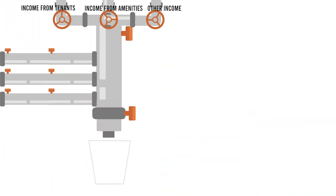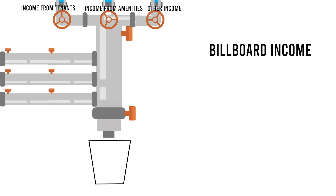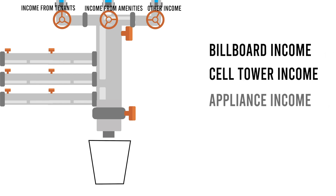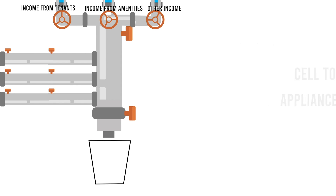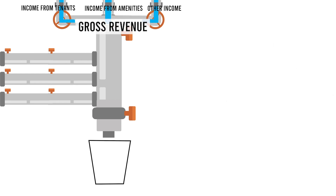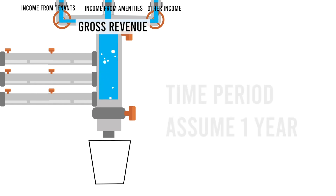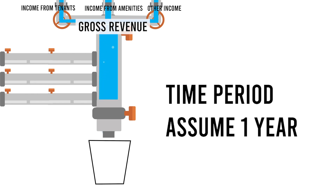Flowing into your pipe is all the income from your tenants for rent, and whatever else you might be collecting for — billboards, cell tower rental, laundry, vending machines, amenities, etc. This is your gross revenue, the total amount of money you collected for a given time period. Let's use a year in this case.